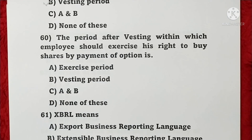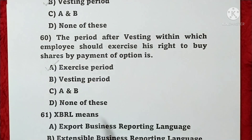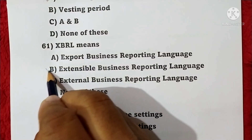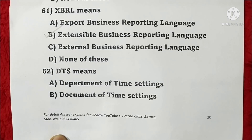Question 60: The period after vesting within which an employee should exercise his right to buy shares by payment of option price is called the exercise period — option A is correct. Question 61: XBRL means Extensible Business Reporting Language — option B is correct. Question 62: DTS means Discoverable Taxonomy Set — option C is correct.